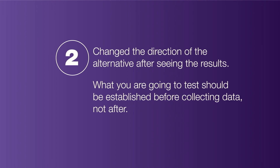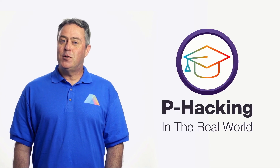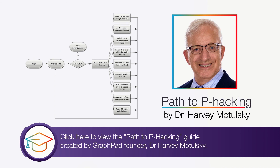What you are going to test should be established before collecting data, not after. Third, even if these were the only tests we planned, we should have adjusted the p-values for the fact that we looked at multiple tests. This example shows a few ways p-hacking can occur. For more reminders, check out the very helpful Path to P-Hacking guide created by GraphPad founder Dr. Harvey Motulsky.